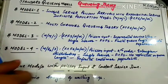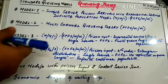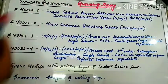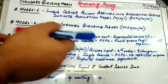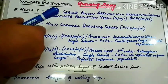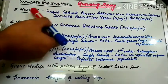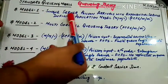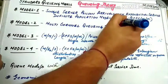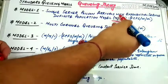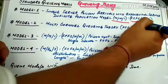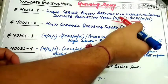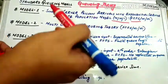Let us start with the first model. The first model is a system of single server with Poisson arrivals and with exponential service. The arrival rate is lambda and the service rate is mu. In this first model there will be a single server with Poisson arrival and exponential service. The population model will be infinite. This particular model is coded as M/M/1, and it follows FCFS — first come first served.